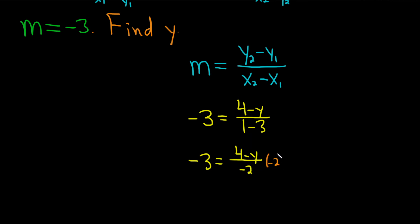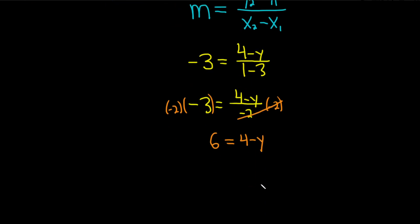So I'll put one here on this side, and put one here on this side. So negative 2 times negative 3 is 6, and these cancel. And then here we end up with 4 minus y. Then we can subtract 4, so minus 4 minus 4. So we have 2 equals negative y.